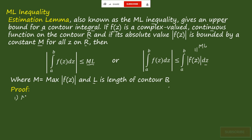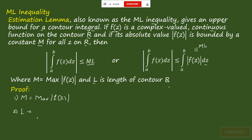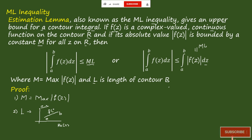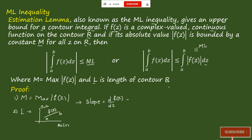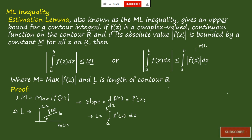M is the maximum value of |f(z)|. For the length L, consider graphically: the real part of z on the x-axis and the imaginary part of z on the y-axis. For a piecewise curve from a to b, the slope is found by differentiating f(z) with respect to z, giving f'(z). The length is then the integral from a to b of |f'(z)| dz.